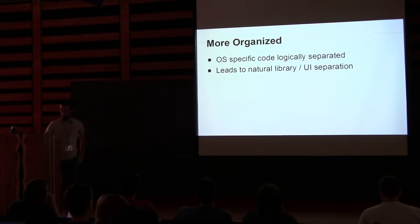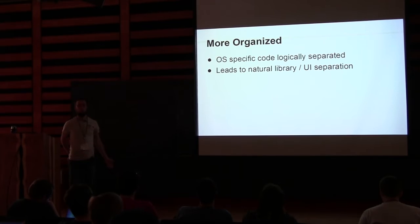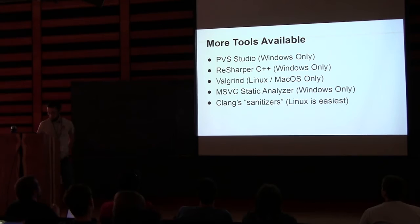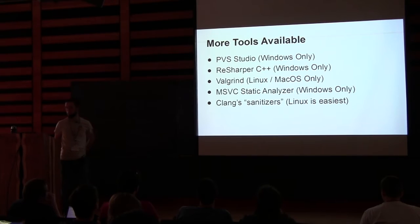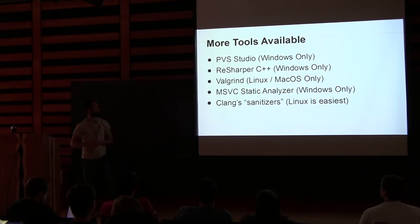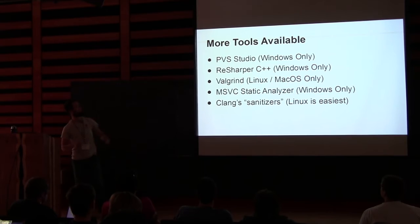Cross-platform code is more organized. You should have your OS-specific code separated out from your logic and the rest of your system. If you don't, you'll end up with lots of conditionally compiled code interspersed throughout your library or UI. Cross-platform also gives you many more tools available. With C++11, 14, and people playing with 17, Visual Studio has been kind of sidelined by people who want to push their C++ forward. But let's not ignore Windows. If you're on Windows only, you're missing out on being able to do some runtime analysis of your code with Valgrind.